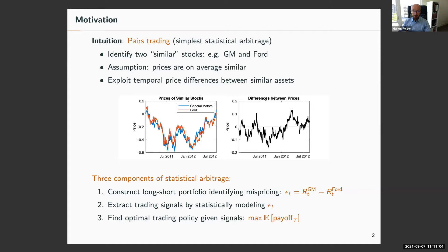The idea is to identify two similar stocks — I'll take General Motors and Ford as an example. The assumption is that prices of similar stocks should be on average similar, and temporal price differences could be exploited by this arbitrage strategy, because similar assets on average have similar prices and everything that deviates has to be temporary.